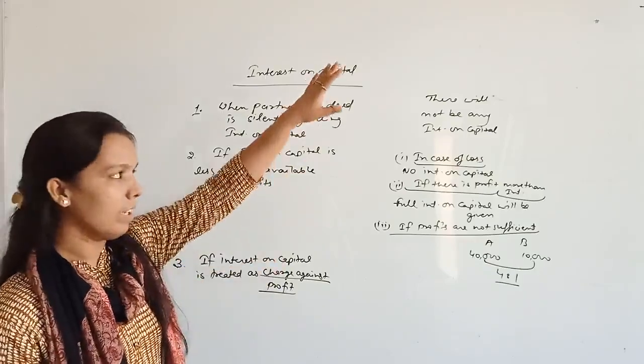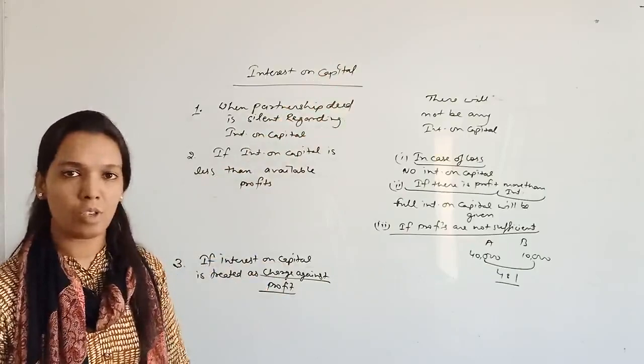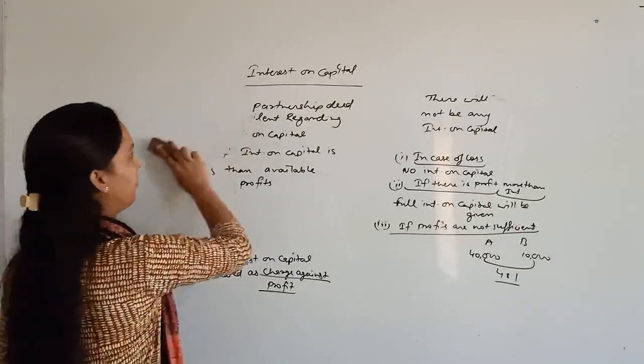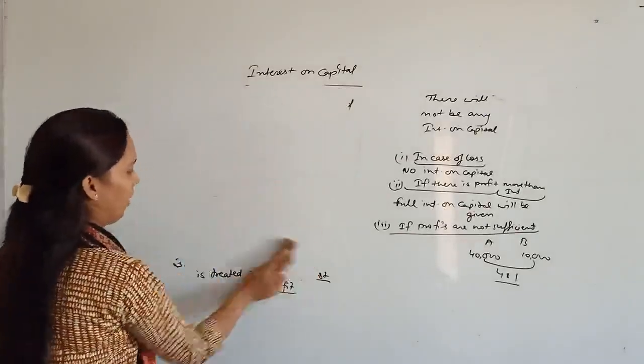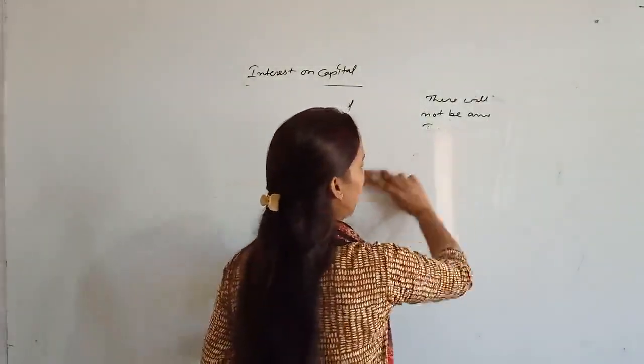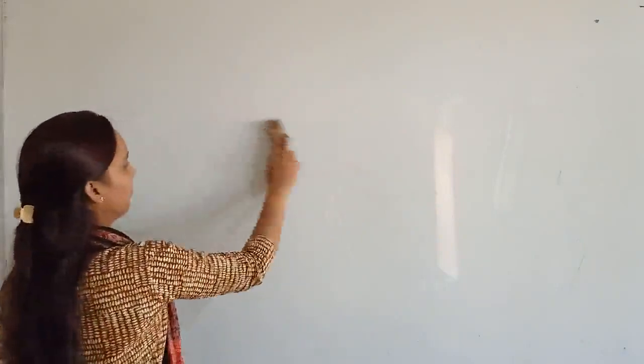I am taking question number 35 that will include all these conditions, so it will be easy to understand. In this question, some cases are given and on the basis of these cases we have to prepare the accounts. X and Y are partners sharing profits and losses in the ratio of 2:1, with capitals of 50,000 and 30,000 respectively.